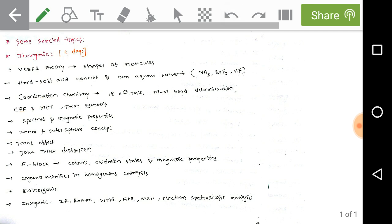In that, 18-electron rule, metal-metal bond determination, crystal field theory, molecular orbital theory, term symbols. Just concentrate on all these important topics in coordination chemistry. And spectral and magnetic properties of the transition and coordination elements.